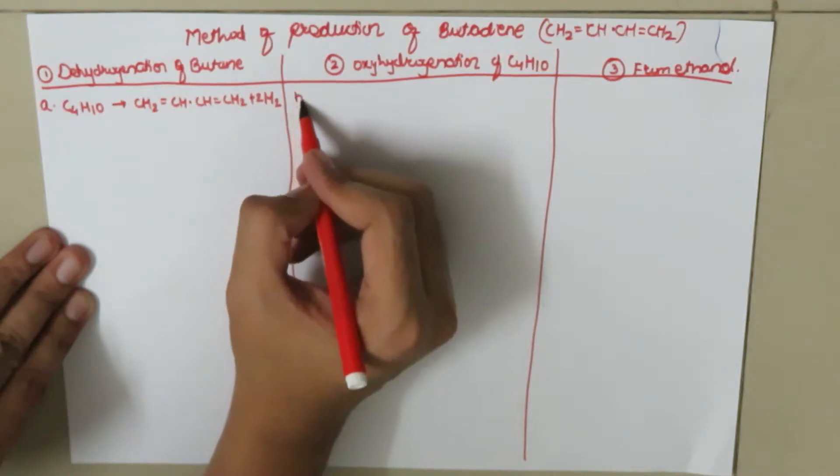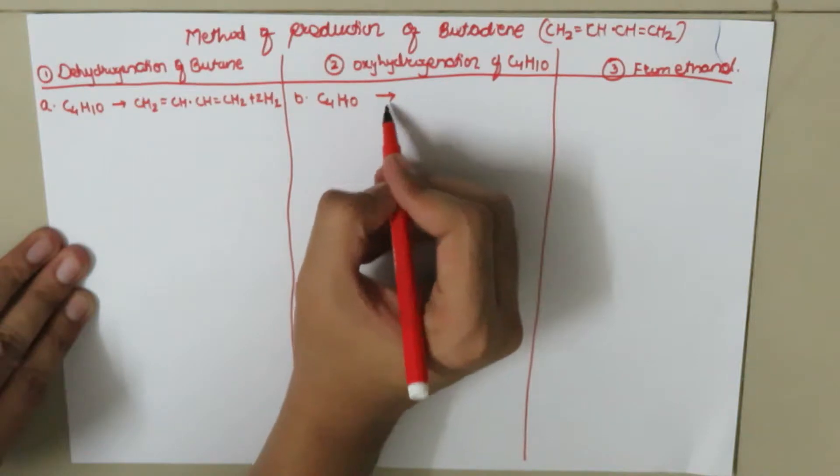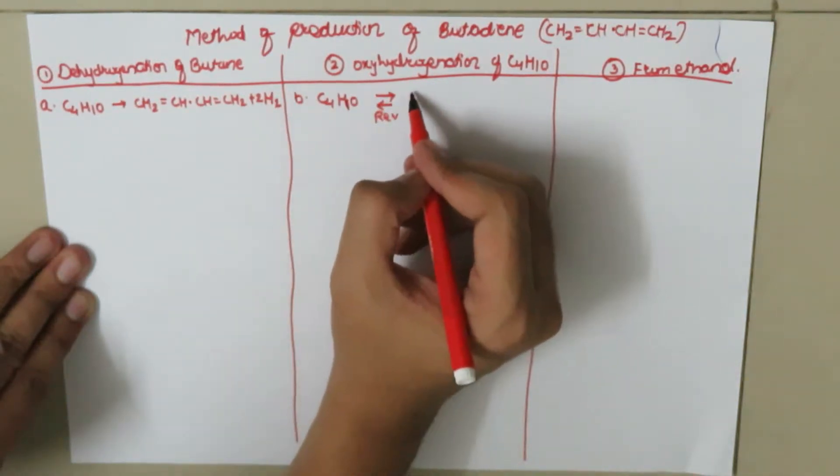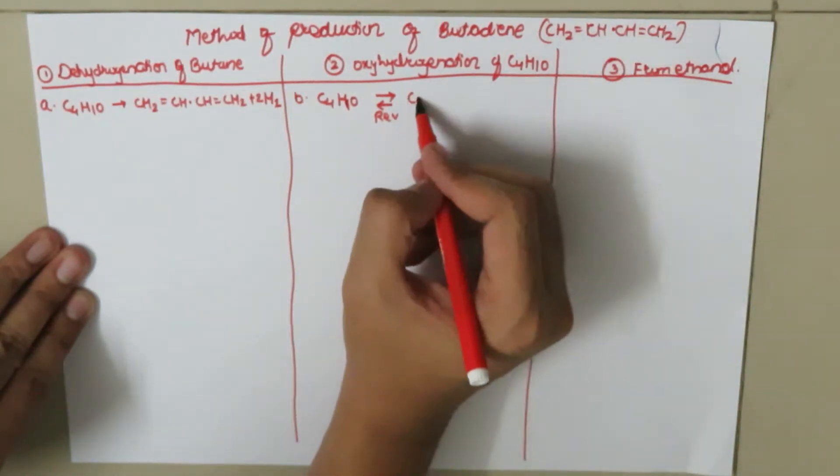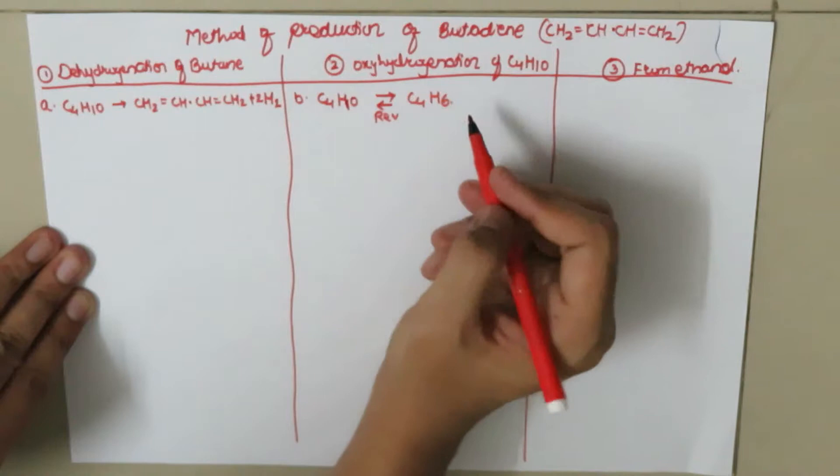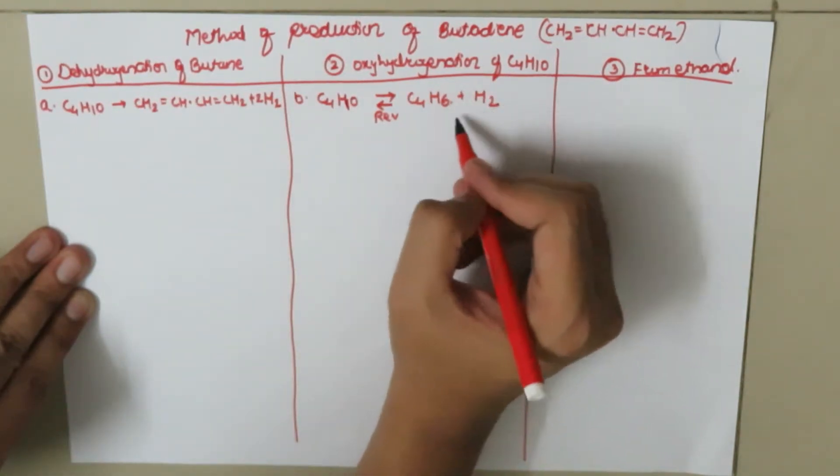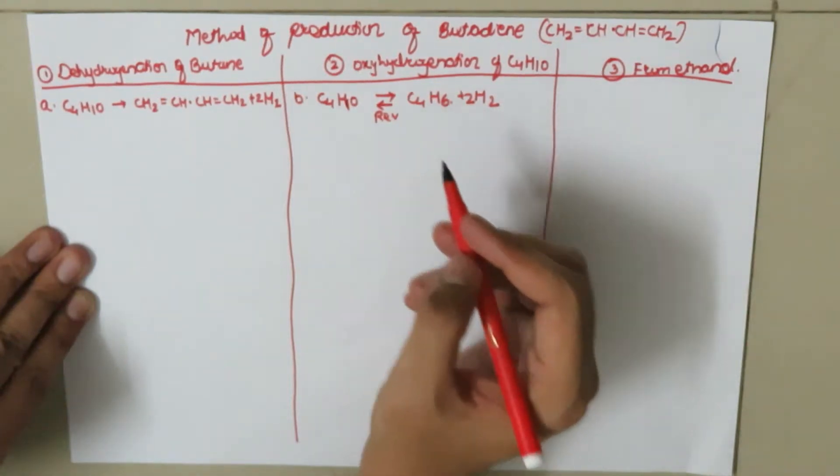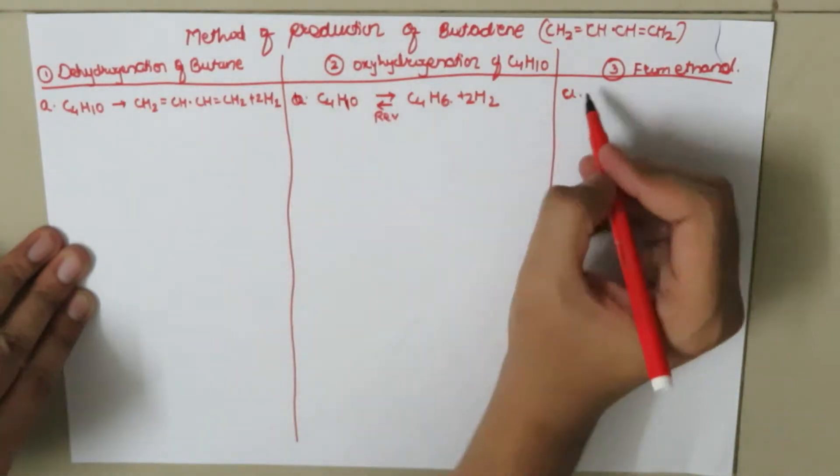The reaction in this process is C4H10, and it's important to keep in mind that this is a reversible reaction. This should give us C4H6 plus H2. Now this reaction is balanced, and this is the first point.